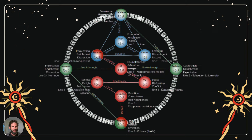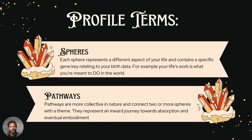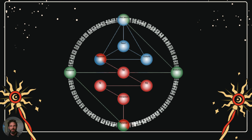So we're going to start by defining some terms. First, we have spheres, and there are 11 spheres, but three of them have a double meaning, and we'll talk more about that later on. Each sphere represents a different aspect of your life and contains a specific key relating to your birth data. Here we see the spheres — all the different circles — and the title of each sphere is bolded at the top. For example, the very top sphere is called your life's work, and that's what you're here to do in the world.